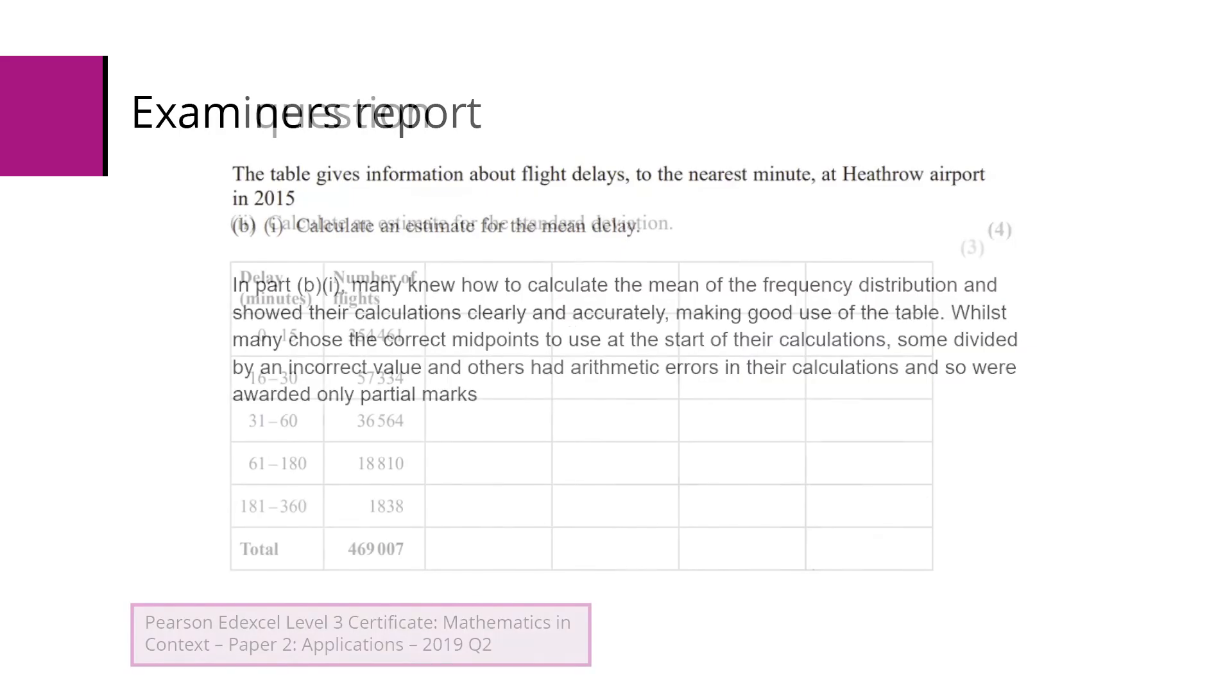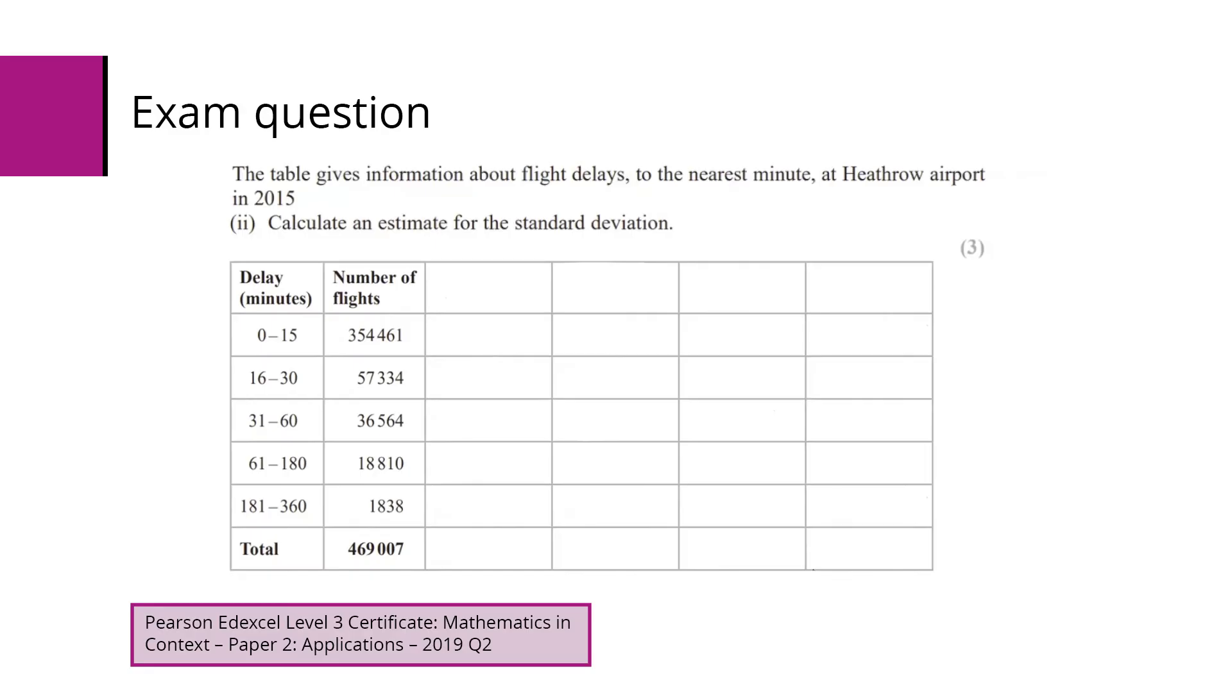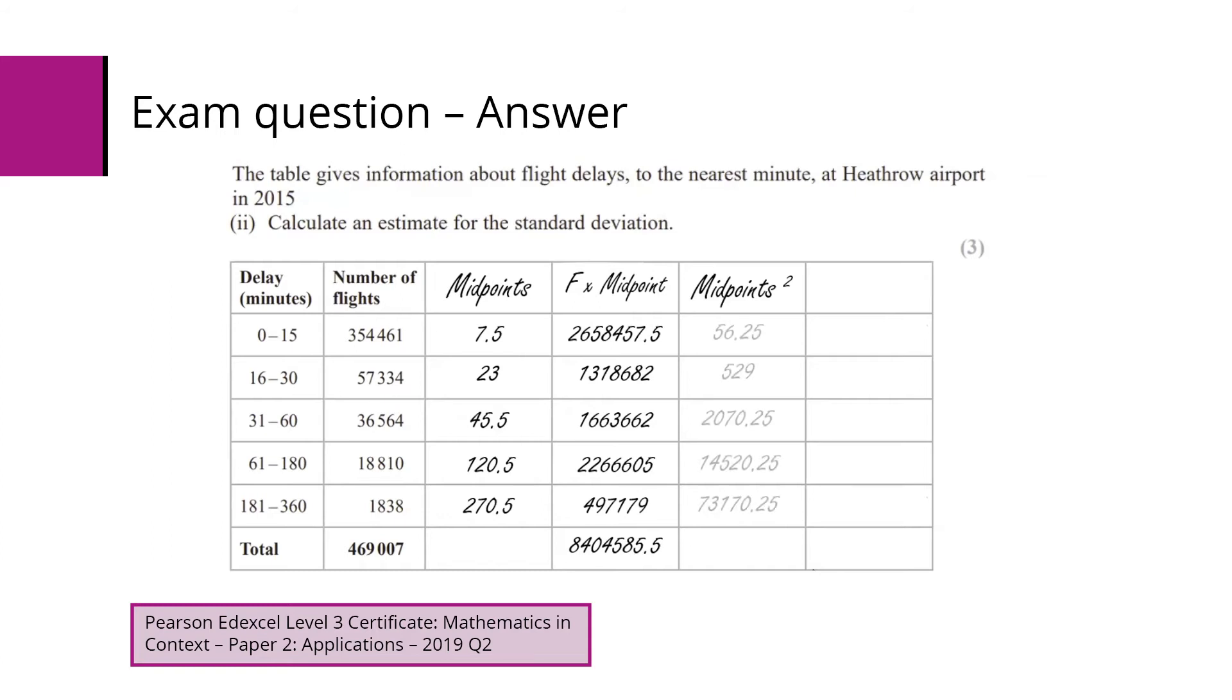Part (b)(ii) says calculate an estimate for the standard deviation. If we were carrying on, we'd already have those first two columns filled in from the last question. Standard deviation, the quickest way to do this by hand, is to use the values squared, so we want these midpoints squared, that gives us these values here.